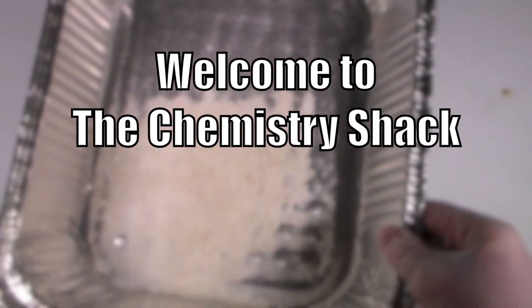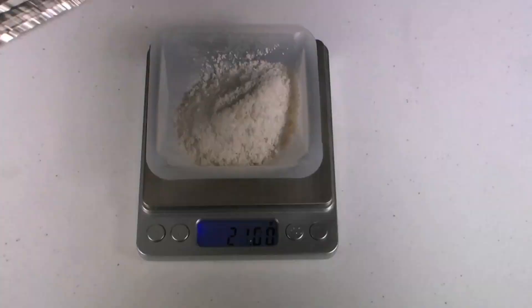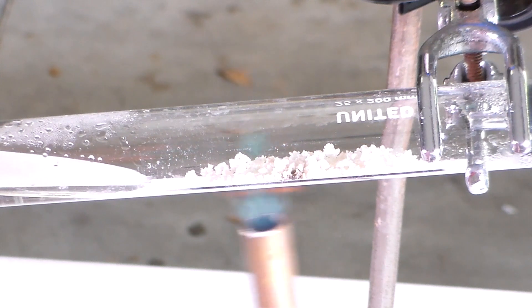Hey guys and welcome to the Chemistry Shack. In a previous video, I made aluminum oxide. In this video, we will be using that aluminum oxide to dehydrate ethanol in order to make ethene gas.